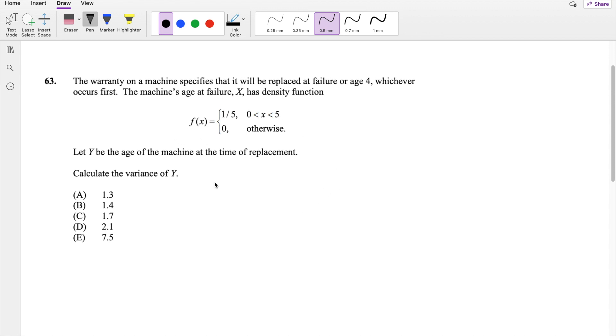So the warranty on a machine specifies that it will be replaced at failure or age 4, whichever occurs first. So if it's at 4, and if it's past 4 years, like 4 to 5, then it's still going to be 4. But if it's before 4 years, it's going to be x years, right? Where x is the number of years, the age at failure, and we're asked to find the variance of y.